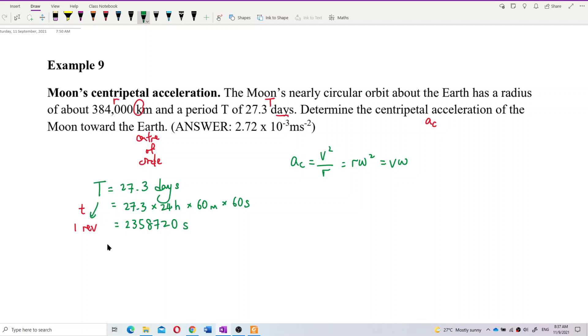So now I want to find omega. Omega is 2π over period. Okay, you must have the period in SI unit first before you can substitute into here. So 2π over period. Let's just calculate. 2π divided by the period. So my omega is actually 2.6638 exponent negative 6, radian per second. See? I got the omega already.